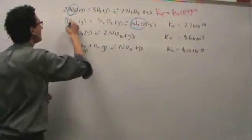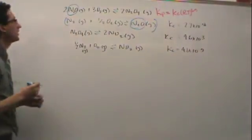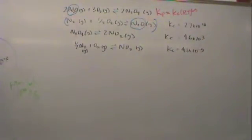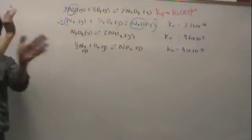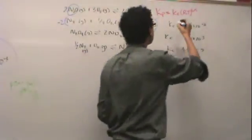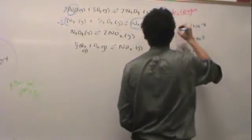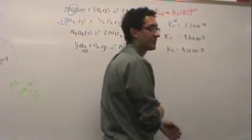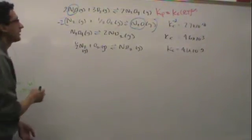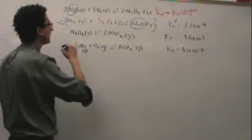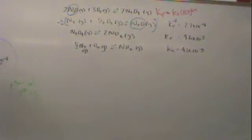So that means to this second reaction I have to multiply by negative two. Negative to flip it. That means what do I do to this? Raise it to the negative two. If it was delta H, I would multiply by negative two, but for K, I raise it to that power. So I'm going to have to do that to that number later.